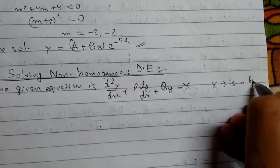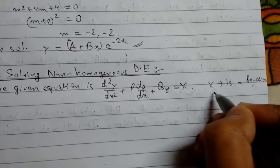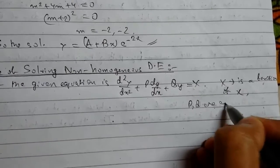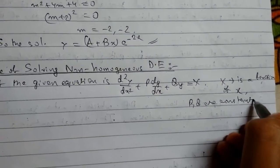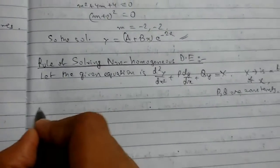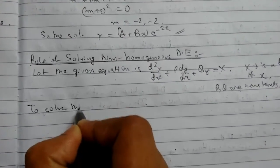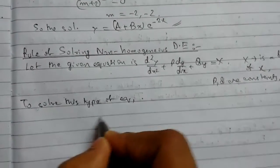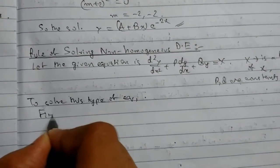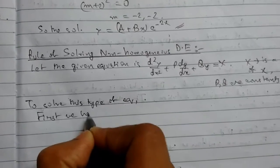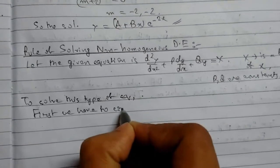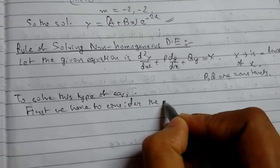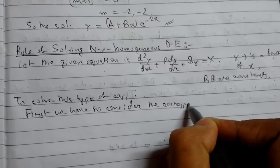x is a function of x and p, q are constants. So now to solve this type of equation, first we have to consider the corresponding homogeneous equation.